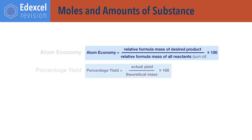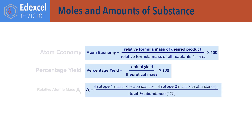Percentage yield equals actual yield, or mass of product obtained, divided by the theoretical or maximum possible mass of product that could have been obtained, times 100. Relative atomic mass, Ar, equals the sum of each isotope mass times its percentage abundance, divided by 100.